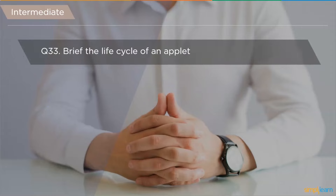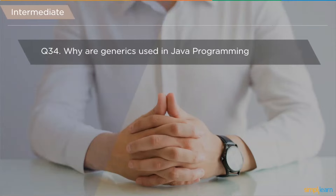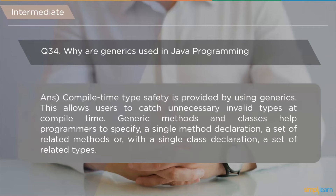The next question is: brief the life cycle of an applet. The life cycle of an applet involves five stages: initialization, start, stop, destroy, and paint. The following question asks: why are generics used in Java? Compile-time type safety is provided by generics, allowing users to catch invalid inputs at compile time. Generic methods and classes help programmers specify a single method declaration for a set of related methods, or a single class declaration for a set of related types.